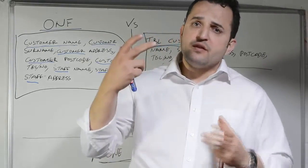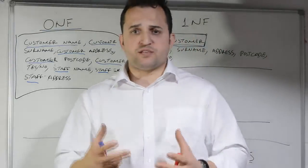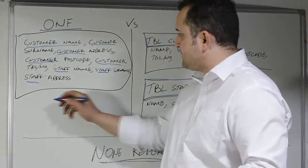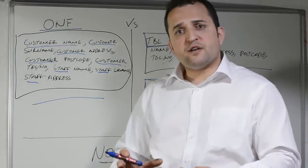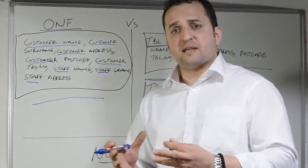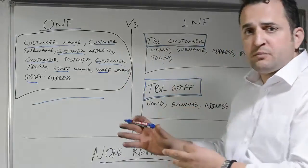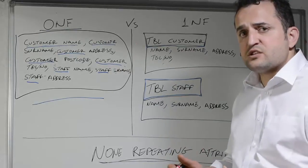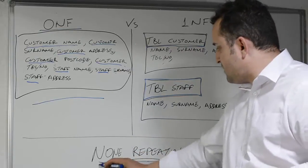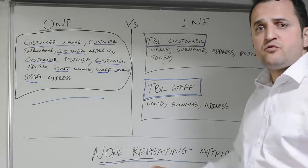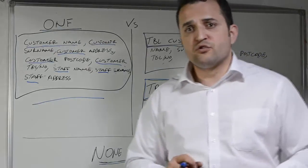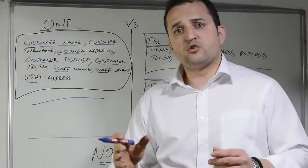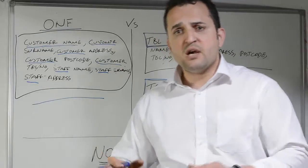By using a process called normalization, we will be able to extract the data from a flat file database and break down this data, converting it into data that will be suitable for a relational database. The first stage is to follow a rule which is non-repeating attributes. This is the first rule in order to convert data from 0NF to 1NF, to transfer data from a flat file database into a relational database.